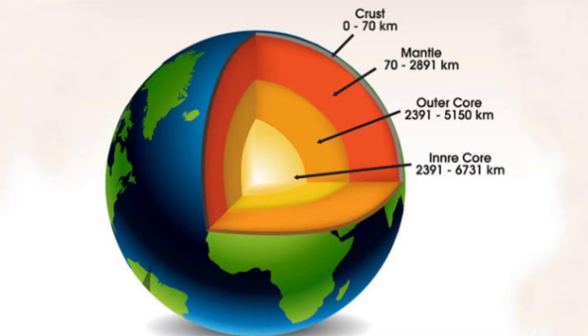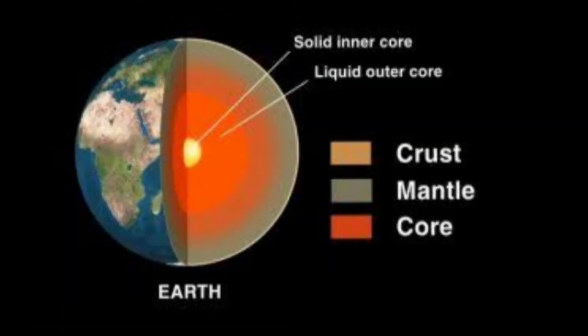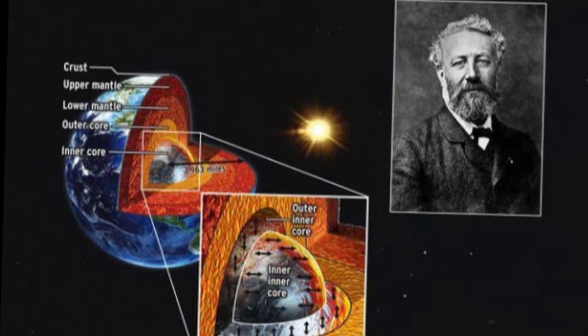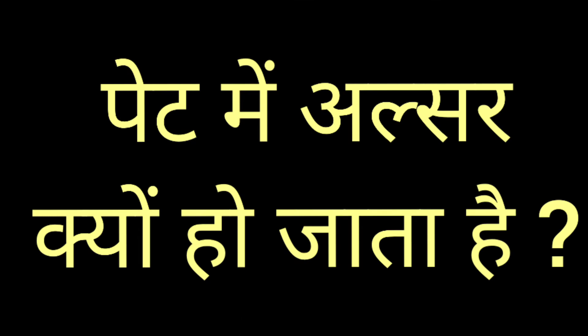Due to the heat inside the earth, the mantle consists of solid and molten rocks. Below the mantle is the core. The deeper one travels inside the earth, the hotter it is. The temperature in the core is between 4,000 and 5,000 degrees Celsius.